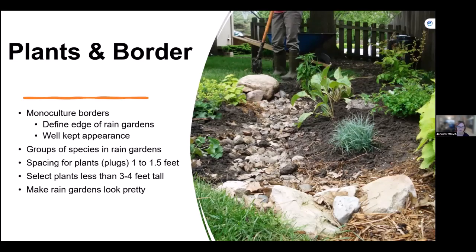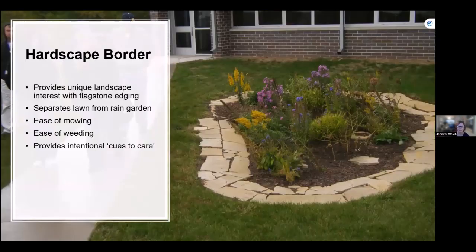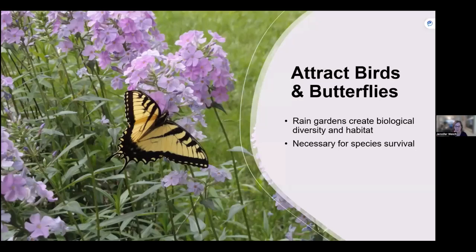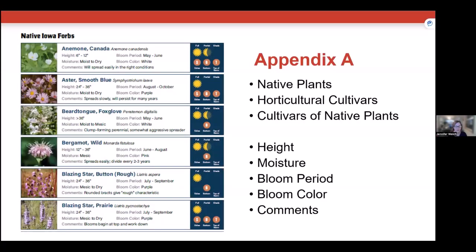We're really trying to create attractive rain gardens with lots of seasonal interest. Sometimes we look at monoculture borders to define edges and maintain a neat appearance; sometimes we plant in groups for a massing effect. Generally, space plants about one to one-and-a-half feet apart and keep them under three to four feet tall, unless you place taller ones in the center or back. Borders can help separate the garden from lawn for easier mowing and weeding.